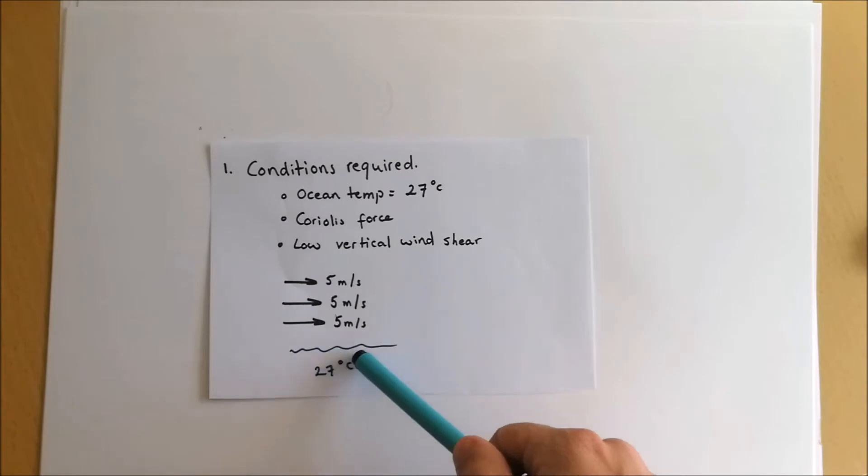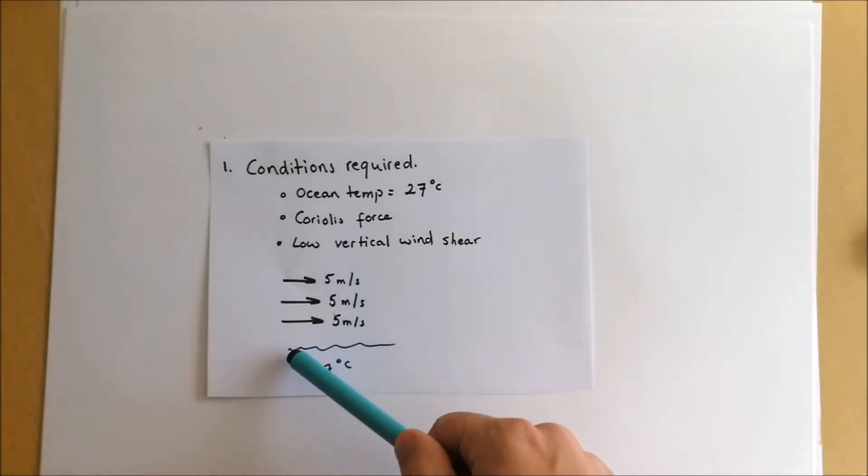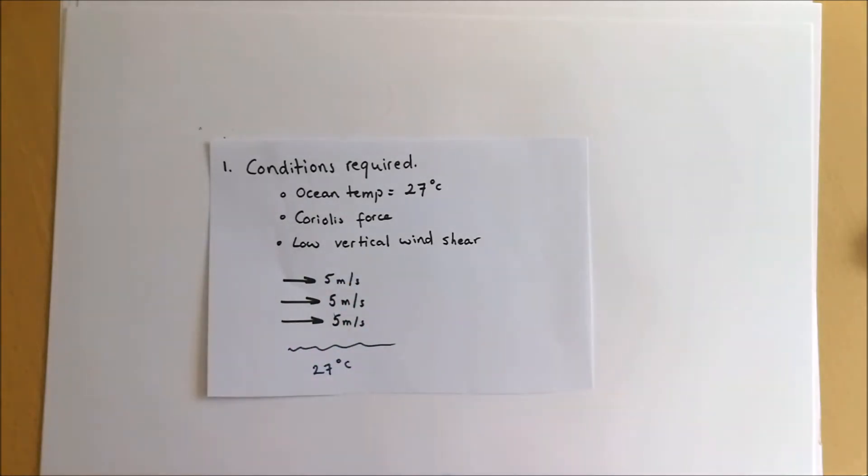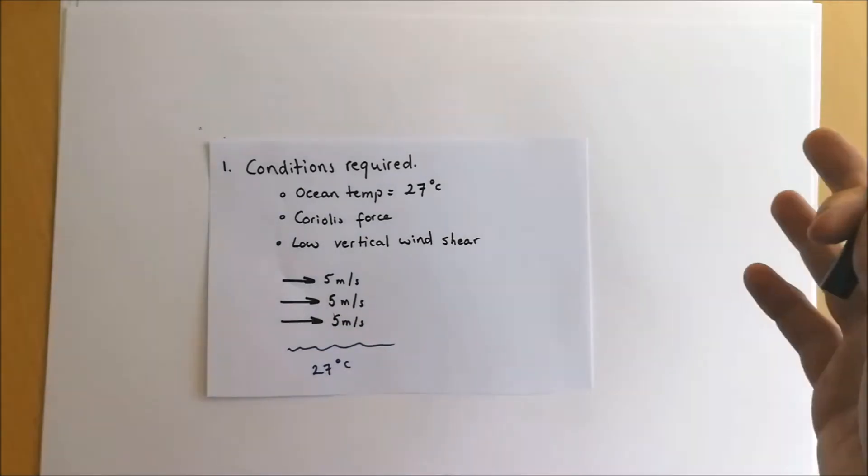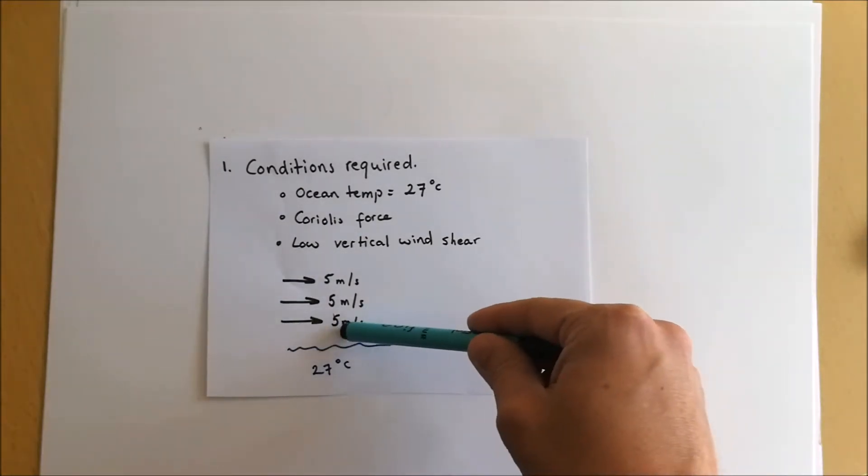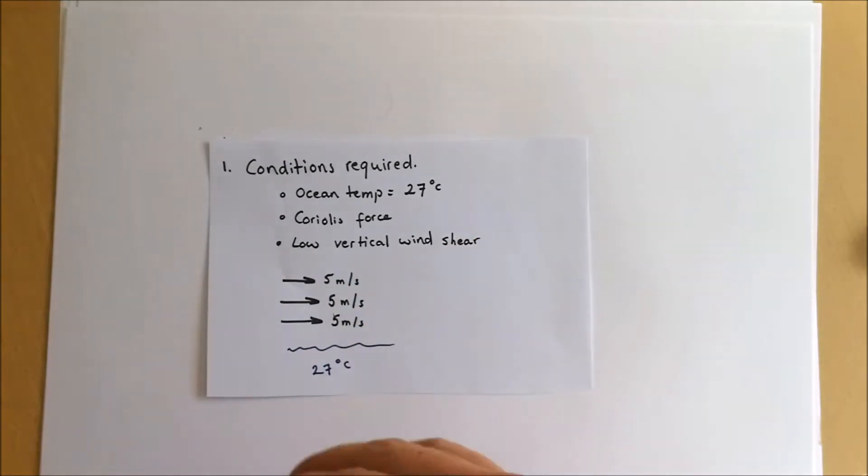We also need a low vertical wind shear. By that I mean that the wind speed as we travel up through the atmosphere from ground surface right down at the bottom of the atmosphere out to the top is very similar. If we have large changes, so in this case here each layer of wind is traveling at a similar speed, five meters per second. If this was different, if this was say five, fifteen, and thirty meters per second, you'd have what we'd call a high vertical wind shear. This wind speed would be increasing significantly through the atmosphere and that would stop any cloud development, which is fundamental for a hurricane to form.